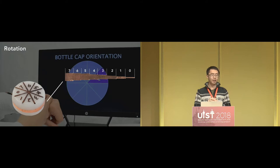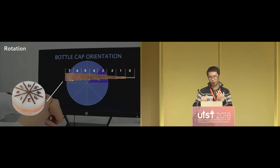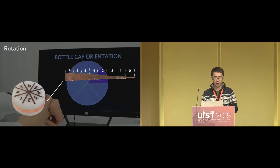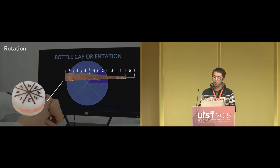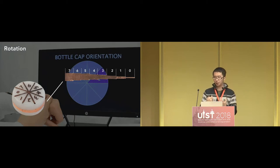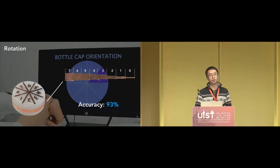Besides sliding and hinging, Intuitivo also supports rotation. To enable rotation, we place a strip of copper tape around the barrel of a bottle cap, with the copper tape gradually increasing to allow the sensor to pick up the cap's orientation based on signal strength. We support eight rotational directions, and a similar evaluation shows the system achieves an average classification accuracy of 93%.